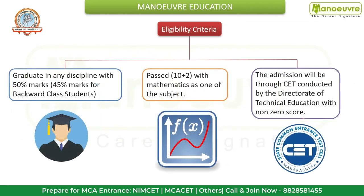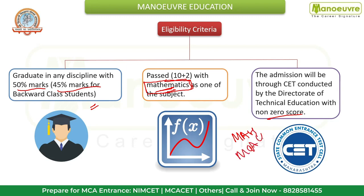For eligibility, a candidate must be a graduate in any discipline with 50% marks — 45% for SC/ST or PWD category. Students must have passed 10+2 with Mathematics as one of the subjects, which is a mandatory requirement to pursue the MCA program. Admission will be through CET conducted by the Directorate of Technical Education, with a non-zero score in Maharashtra MCA CET.